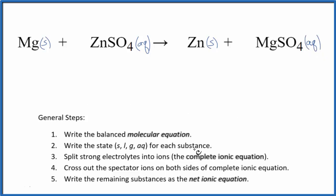So we have the states for each substance. Now we can split the strong electrolytes into their ions for the complete ionic equation. So we have magnesium, that's a solid, we don't split that apart, so that's just magnesium. I'll write the states at the end.